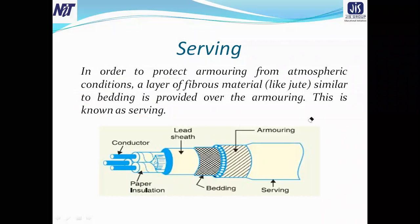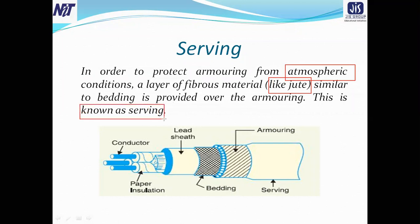The last cover of the cable is the serving. In order to protect the armoring from atmospheric conditions, a layer of fibrous material like jute is provided over the armoring. This is known as serving. So the external part of the cable is called the serving, and it also serves a protection purpose, similar to bedding, using fibrous material like jute.